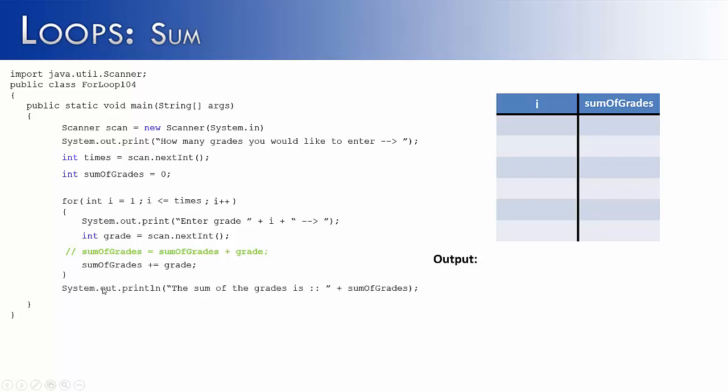And then lastly, once we're done with the loop, we're going to print out the sum of the grades is, and whatever sum of grades is at the end of the loop is what we're going to print out. Another reason why this is outside of the loop. If this was initialized inside the loop and we tried to print it here, it would not print because sum of the grades would be out of scope. It would only exist inside these braces. But because it's out here, it's going to work just fine. Let's see how this code would work.